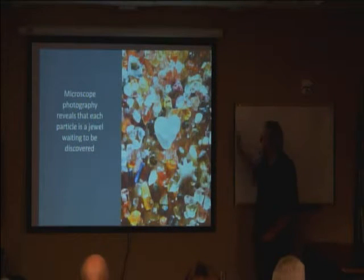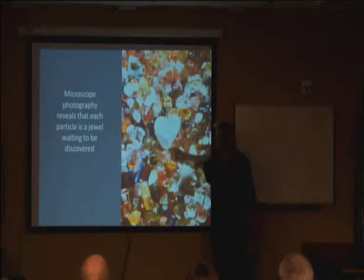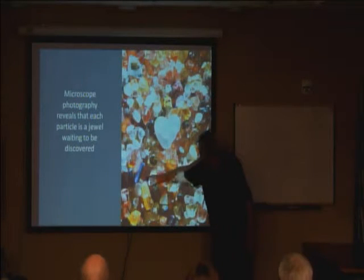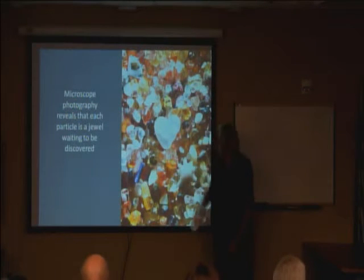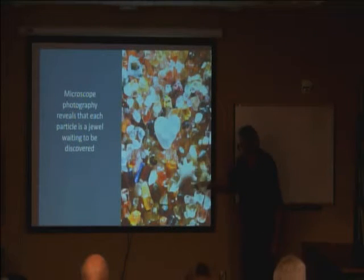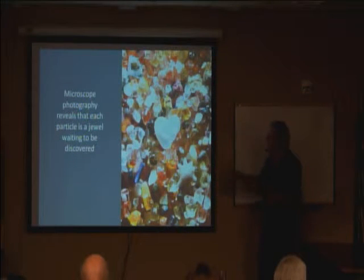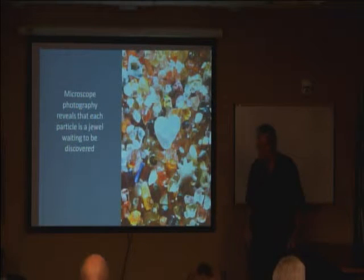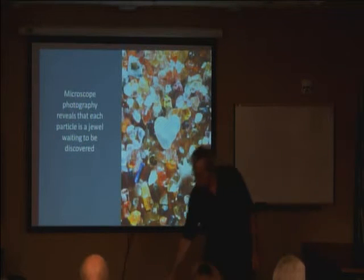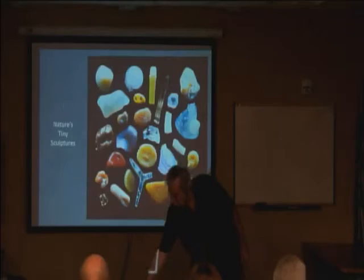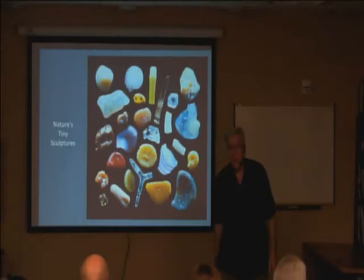This is sand from around the world. This little heart-shaped grain of sand is from Lahaina. This is a little sea urchin spine. This is the protozoa from Okinawa. There are all kinds of minerals and colors — this is a mixture of sand from about a dozen or so places around the world, but they're all jewels waiting to be discovered.